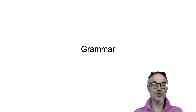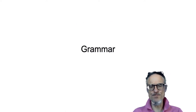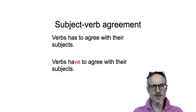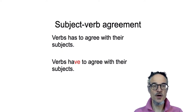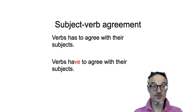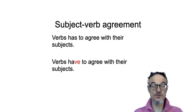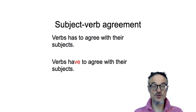Next, grammar. Grammar is tricky. This is a very common mistake in English writing — people make a mistake with the subject and the verb. They have to agree. So verbs have to agree with their subjects: 'I have', 'he has', 'they have'. So the first person, the second person — third person is different to the first person or second person.